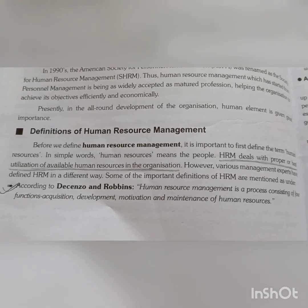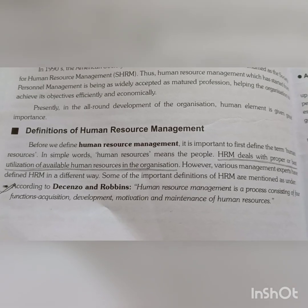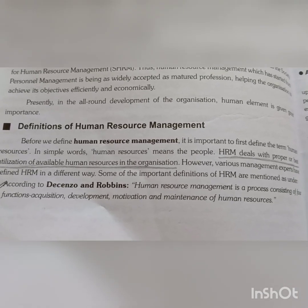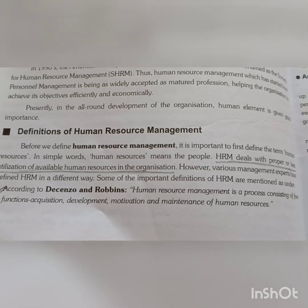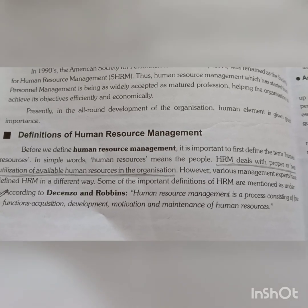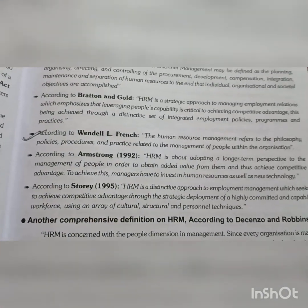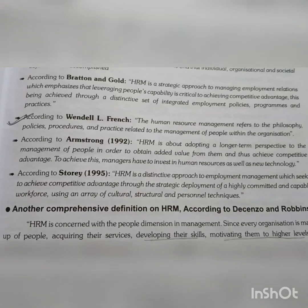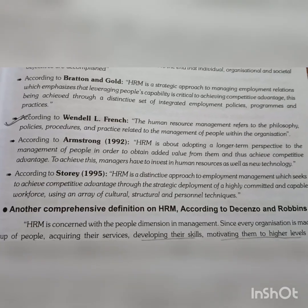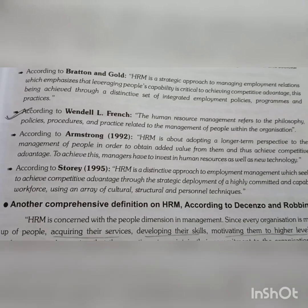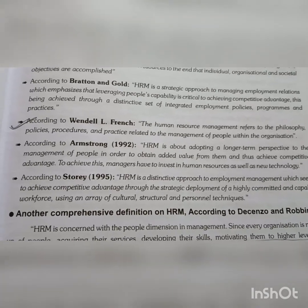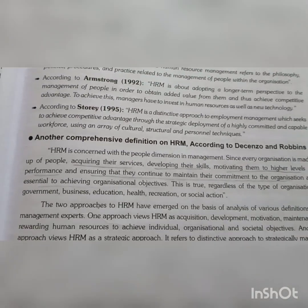HRM is a process. The human resource management is a process which consists of four functions: Acquisition, Development, Motivation, and Maintenance of Human Resources. According to Weldon, Human Resource Management refers to a philosophy, policies, procedures and practices which relate to the management of people within the organization. These two definitions are important to learn.